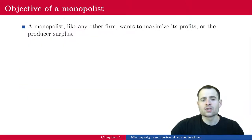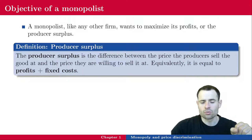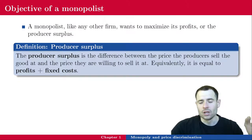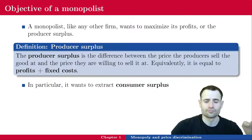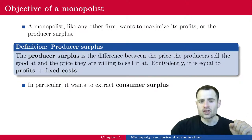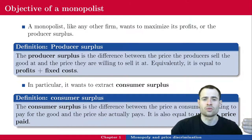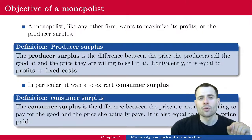Like any other firm, the monopolist is going to maximize its profits, or the producer surplus. The producer surplus is the difference between the price producers sell the good at and the price they are willing to sell it at — equivalently, it equals profits plus fixed costs. The objective of the monopolist is not only to maximize profits but also to extract consumer surplus. Consumer surplus is the difference between the price consumers are willing to pay and the price they actually pay, also equal to utility minus price paid.